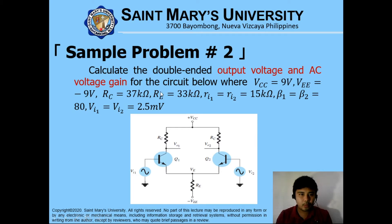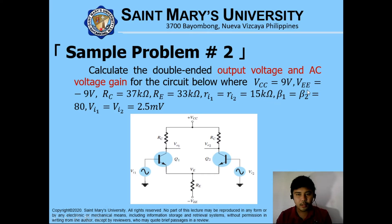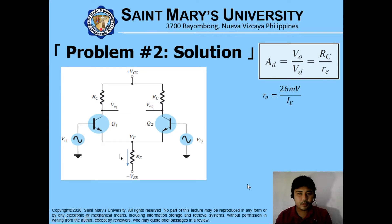For sample problem number two, we are to calculate the double-ended output voltage and AC voltage gain for the circuit below. VCC is equivalent to 9 volts, VEE is equivalent to negative 9 volts, RC is equivalent to 37 kilo-ohms, RE is 33 kilo-ohms, our input resistance is 15 kilo-ohms, our current gain beta is 80, and our input supply is 2.5 volts for both. In order to solve for the double-ended current gain: RC over twice of RE.